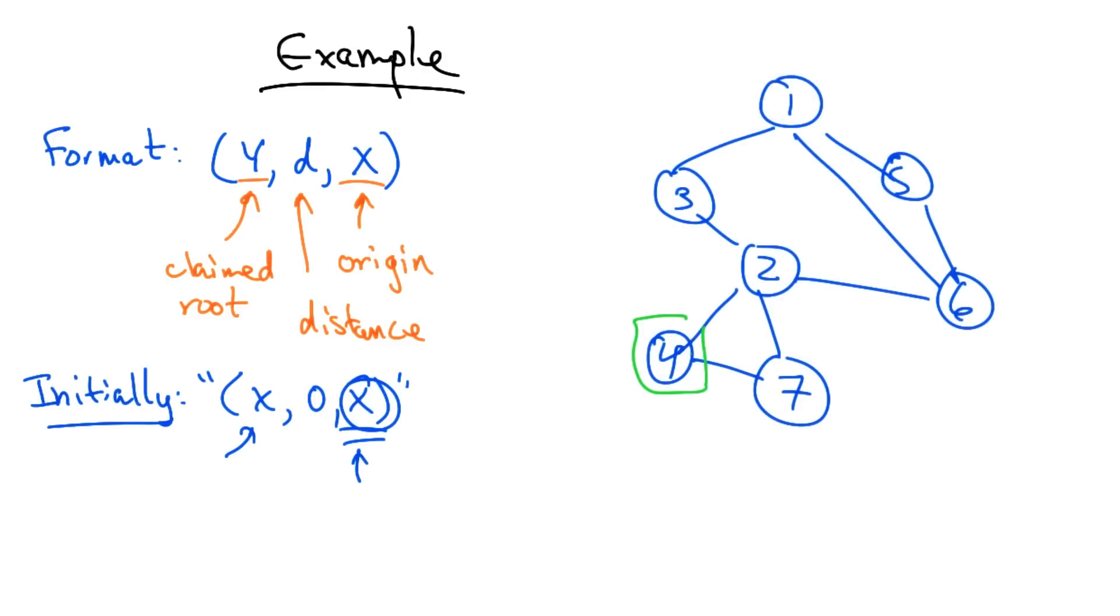Let's suppose that we have the following graph, and switch number 4 thinks it's the root. So it will send a message 4, 0, 4 to nodes 2 and 7.